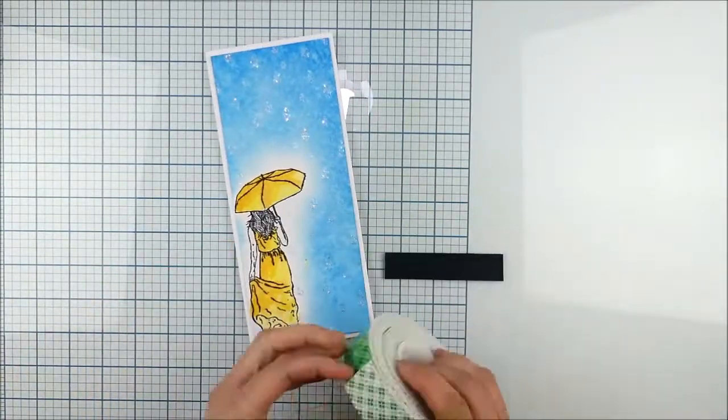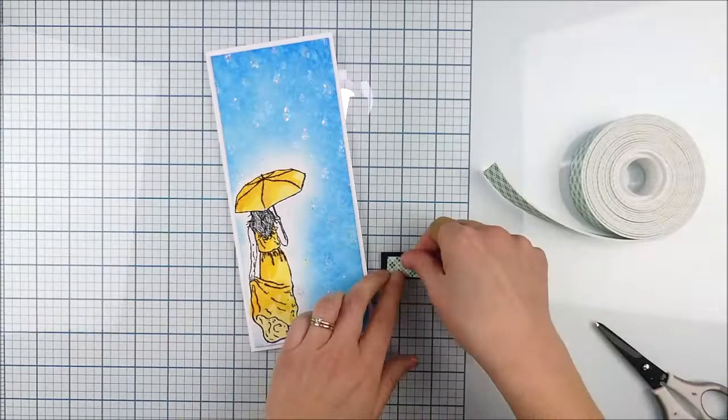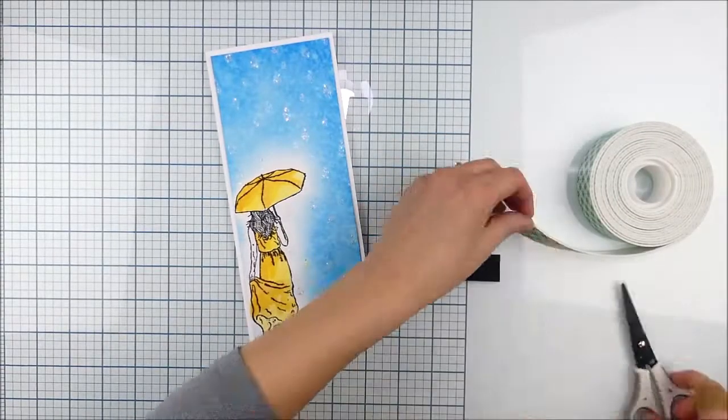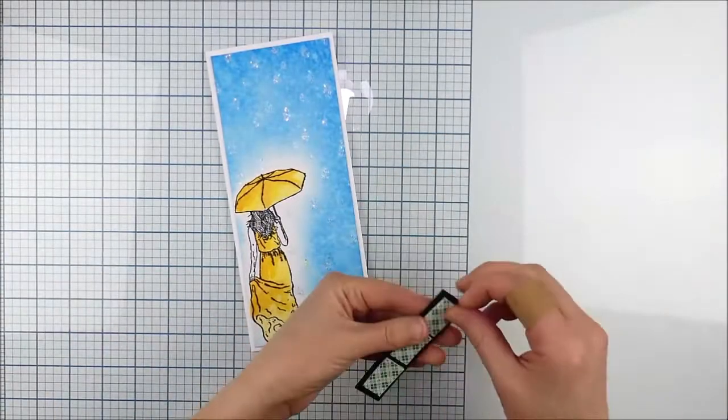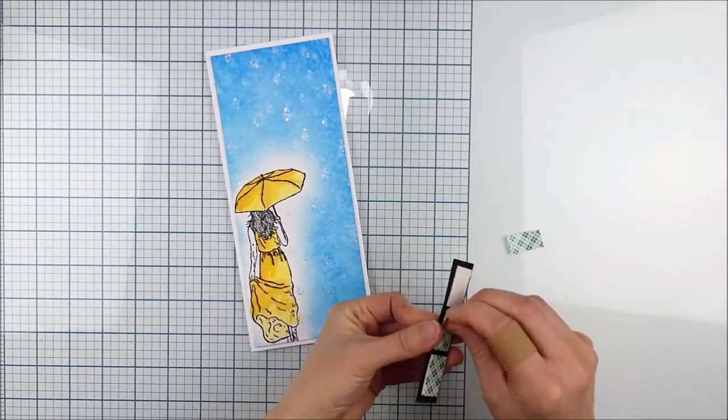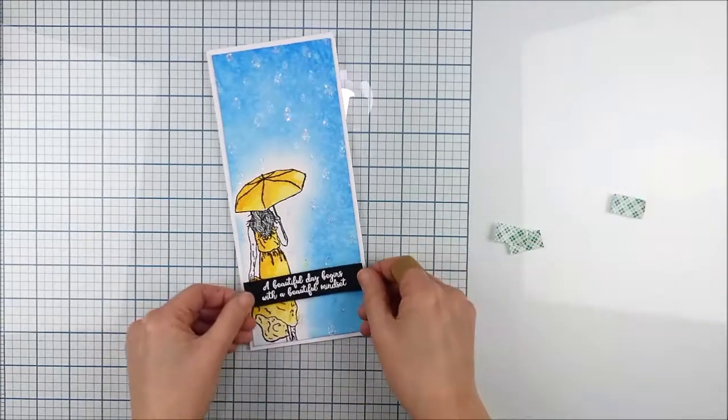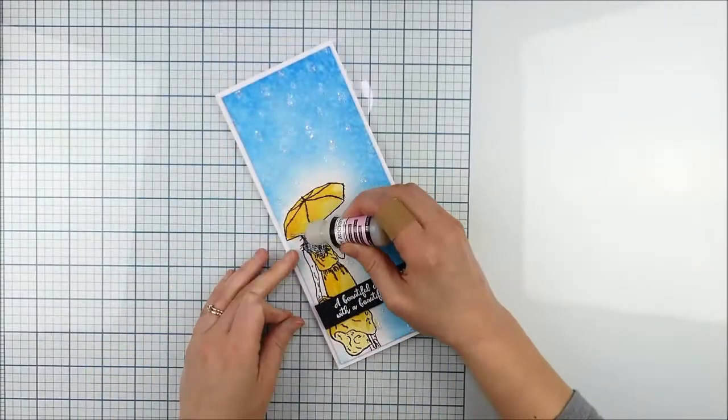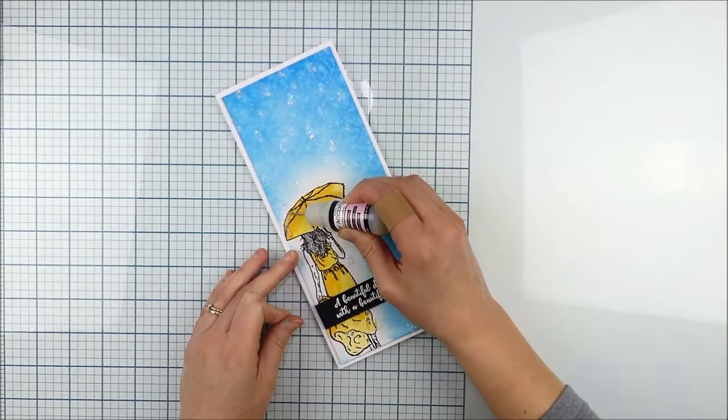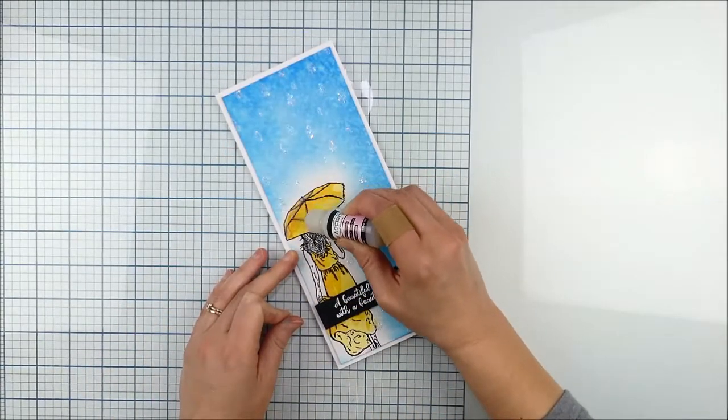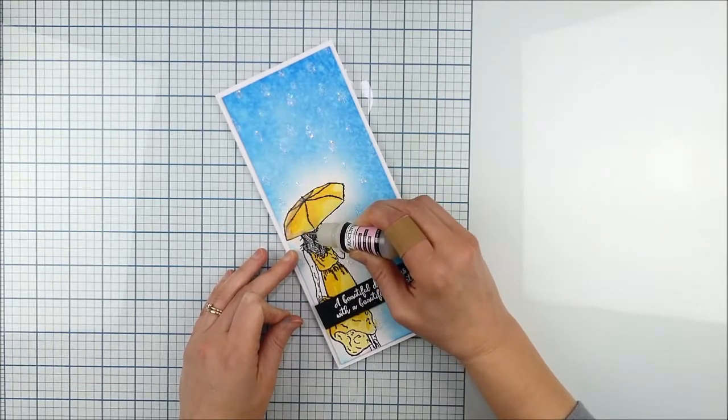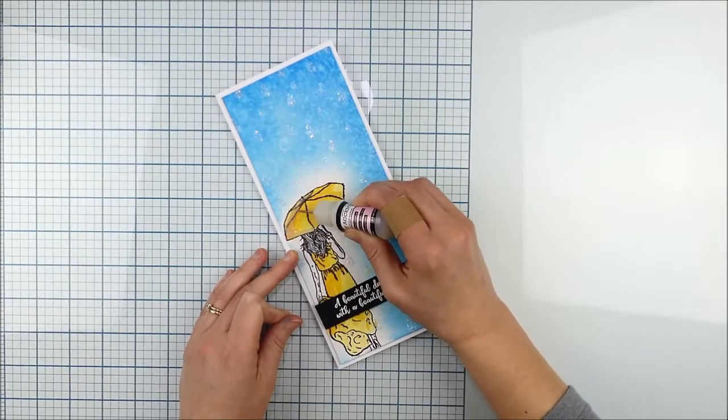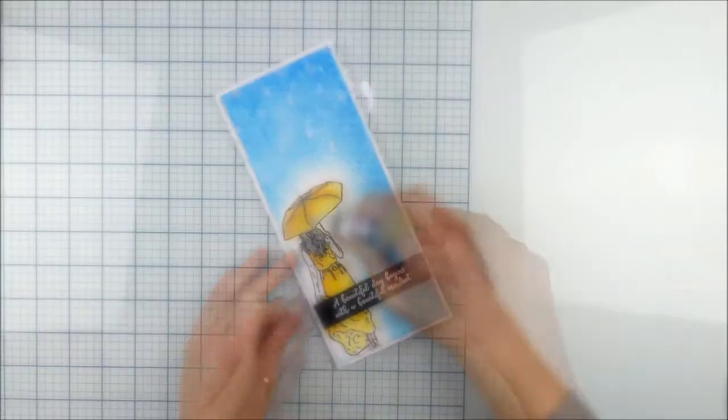And then I already heat embossed a sentiment from the kit as well on a bit of black cardstock so I can just pop that up with some foam adhesive on the background. That's why I didn't pop that whole panel up on my card base. I wanted just to pop that sentiment up with foam. And then as a final finishing touch for a little more texture and shine, I pulled out my glossy accents bottle and just put that on the umbrella. I love how that adds, once it dries, that's just kind of showing it wet there, but you can see that great texture that it adds and a fun little dimensional element.